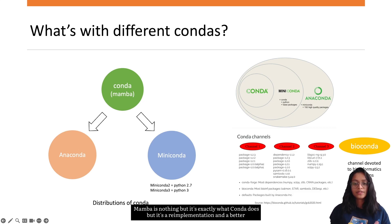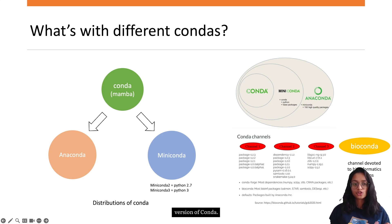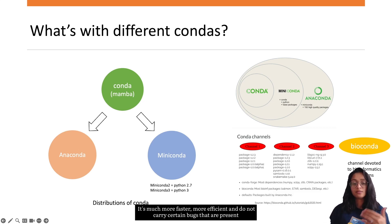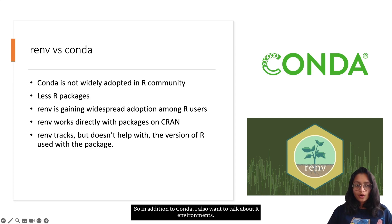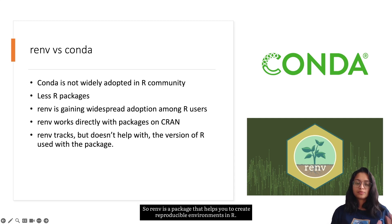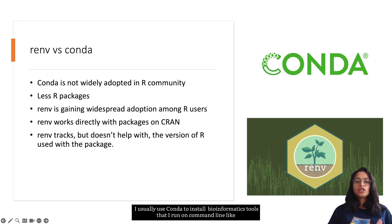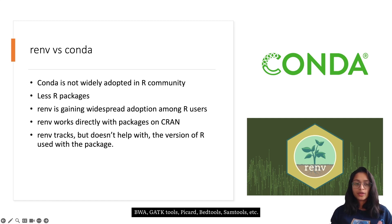You might have also come across mamba. Mamba is a re-implementation of conda — essentially the same functionality but much faster, more efficient, and without certain bugs present in conda. In addition to conda, I also want to talk about R environments. renv is a package that helps you create reproducible environments in R. I usually use conda to install bioinformatics tools that I run on the command line, like BWA, GATK, Picard, BEDtools, and Samtools.